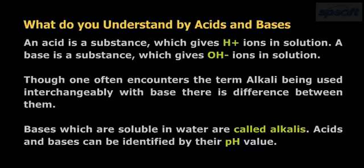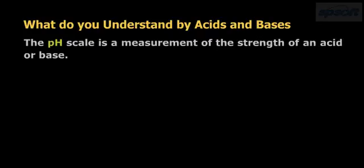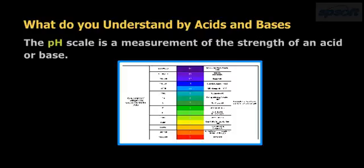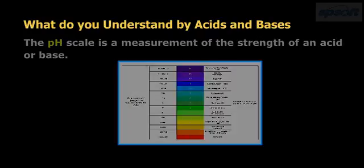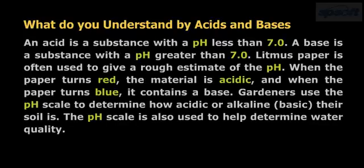Acids and bases can be identified by their pH value. The pH scale is a measurement of the strength of an acid or base. An acid is a substance with a pH less than 7. A base is a substance with a pH greater than 7.